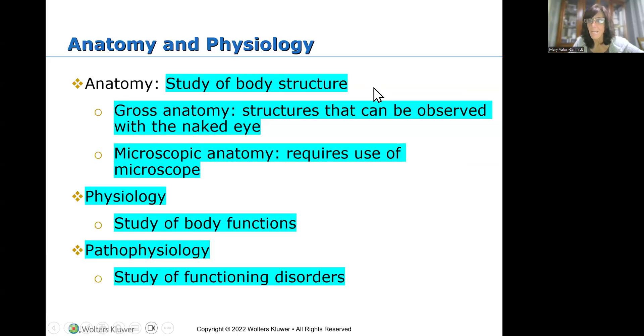First of all, we're going to define anatomy and physiology. Anatomy is the study of body structure. To break it down even more, you have gross anatomy, structures that you can see with your eyes, and then there's microscopic anatomy that requires the use of a microscope. Physiology is the study of body functions, like how the anatomy works, and pathophysiology is the study of disorders.